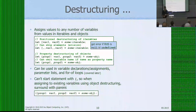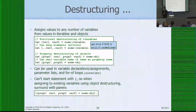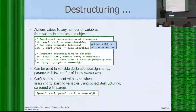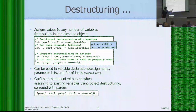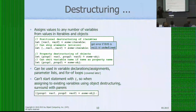You can use destructuring when declaring variables or assigning to existing variables, in parameter lists, and in for-of loops. If you start a line with a curly brace JavaScript thinks you're starting a block, but if you're destructuring into existing variables you have to surround the whole expression with parens. The difference: one form declares new variables and sets them, while the other assigns into already-declared variables and requires the surrounding parens.